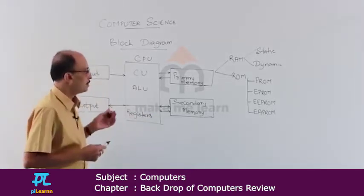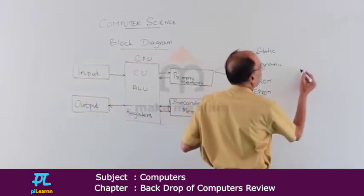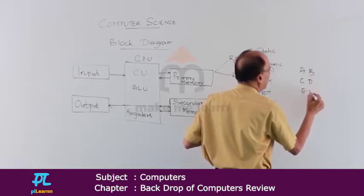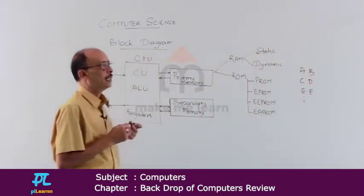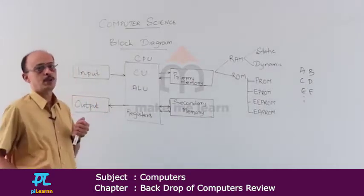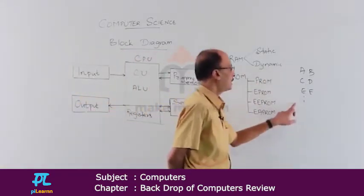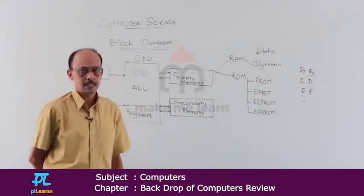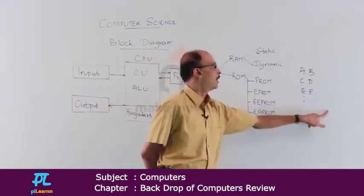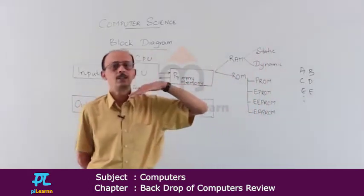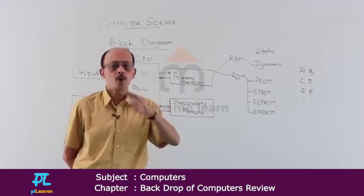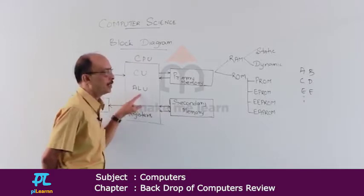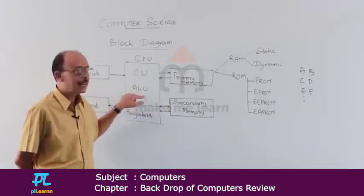There will be a set of registers labeled A, B, C, D, E, F, and so on, depending on the type of central processing unit — you will have a pair of registers. These are called scratch pad registers. These scratch pad registers are used to store data to be processed and data already processed. They are used by the arithmetic logic unit for storing intermediate data.